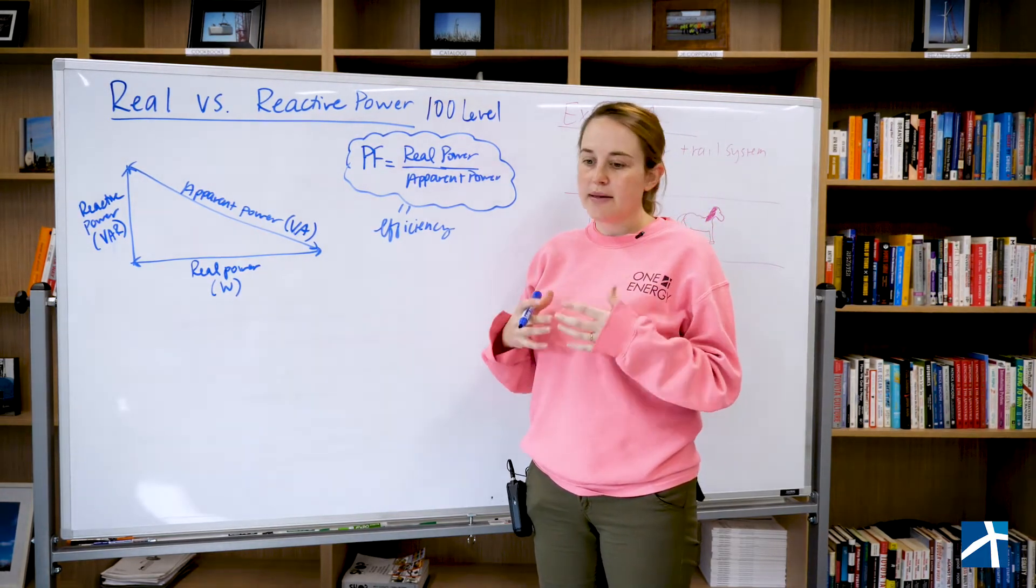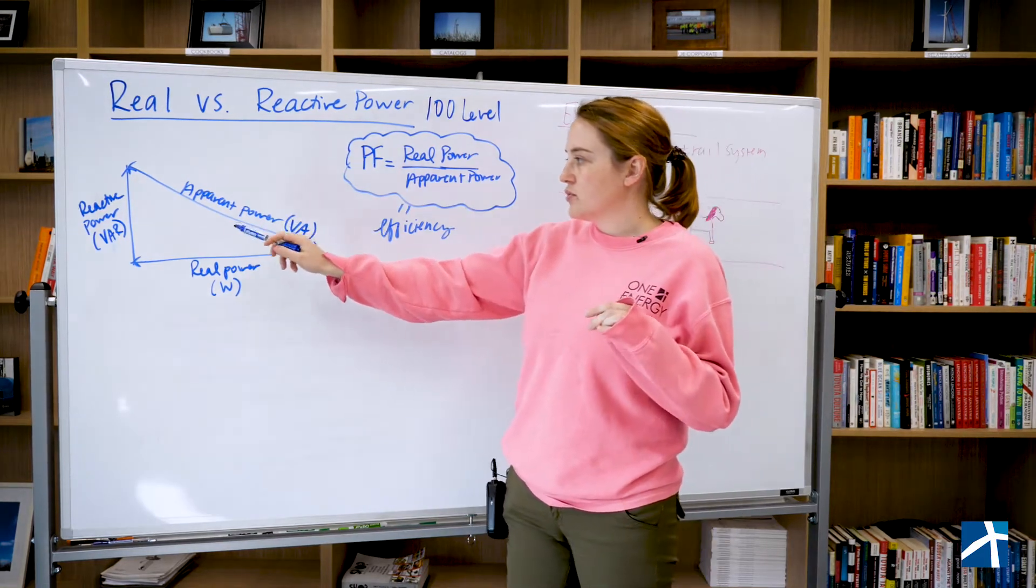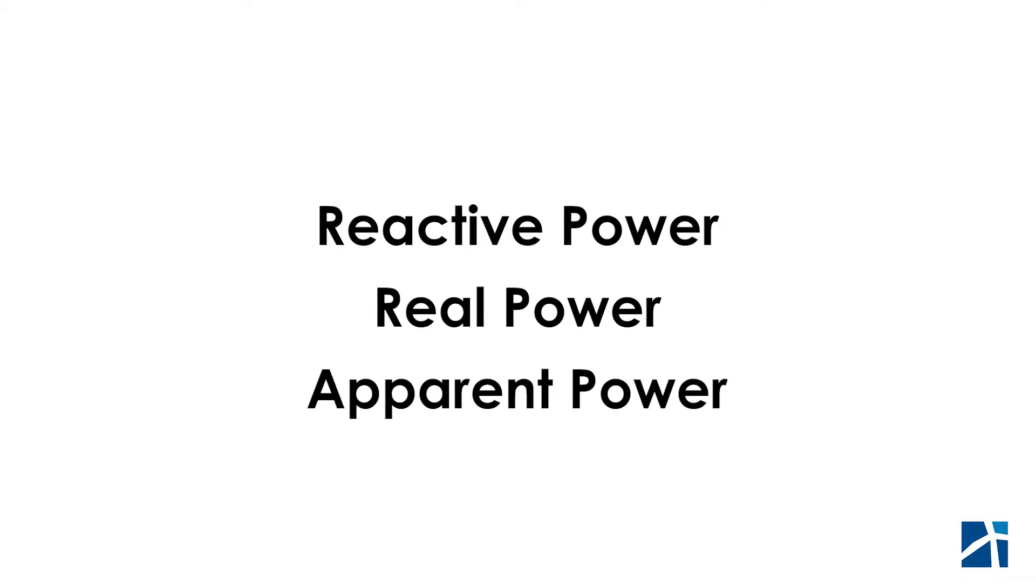In the power industry, you are going to hear often about reactive power, real power, and apparent power. These are three types of power that are prevalent in AC circuits.